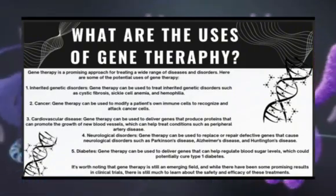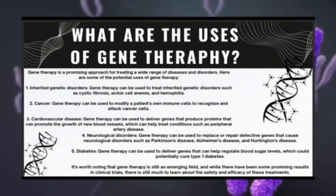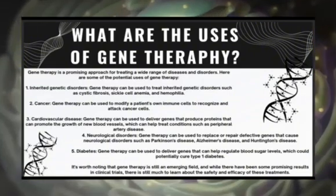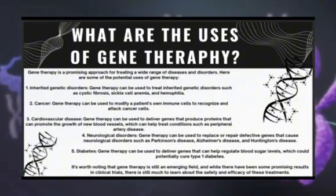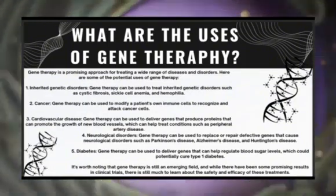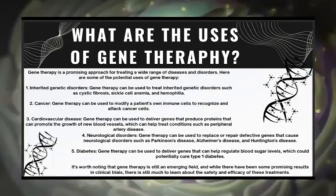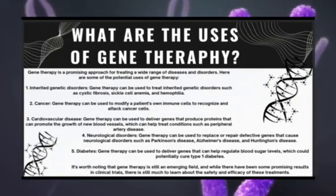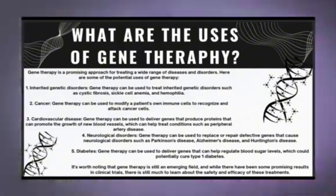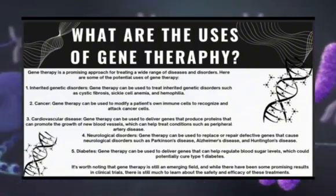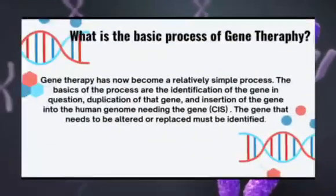Number four, neurological disorders: gene therapy can be used to replace or repair defective genes that cause neurological disorders such as Parkinson's disease, Alzheimer's disease, and Huntington's disease. And the last is diabetes: gene therapy can be used to deliver genes that help regulate blood sugar levels, which could potentially cure type 1 diabetes. Those are the potential uses of gene therapy. It's worth noting that gene therapy is still an emerging field, and while there have been some promising results in clinical trials, there is still much to learn about its safety and efficacy.